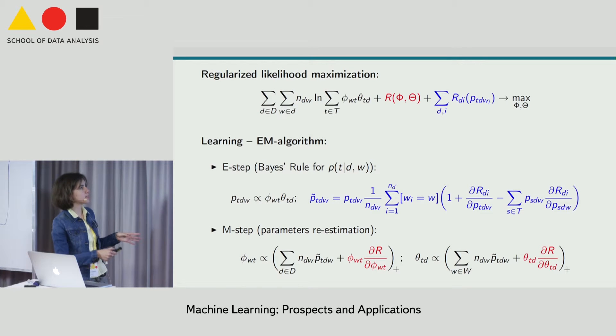It sets likelihood maximization problem to fit phi and theta to the observed data. And the learning is iterative process. The E-step calculates probabilities over topics for each word - that's what we have colored right now. And M-step re-estimates phi and theta.